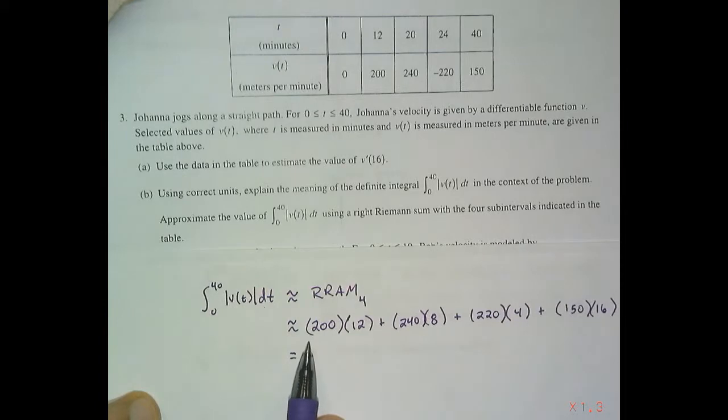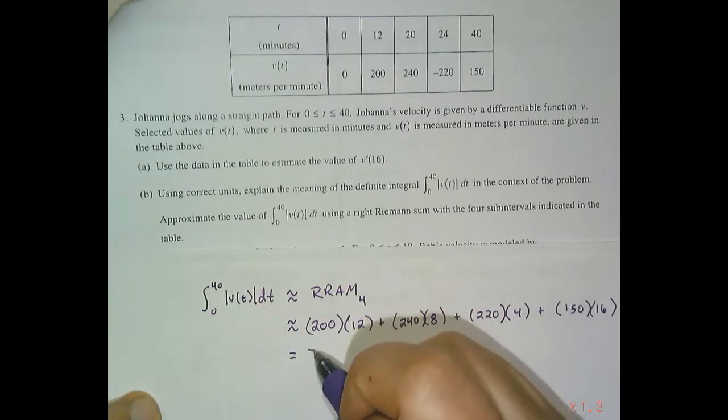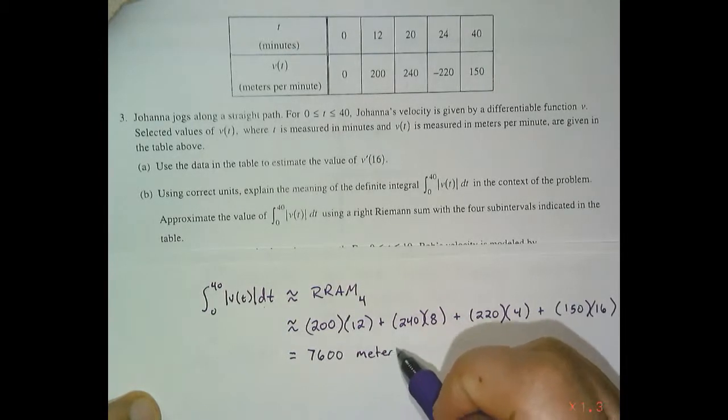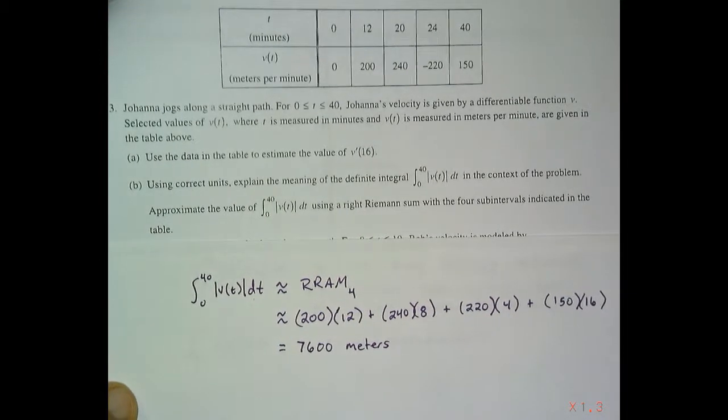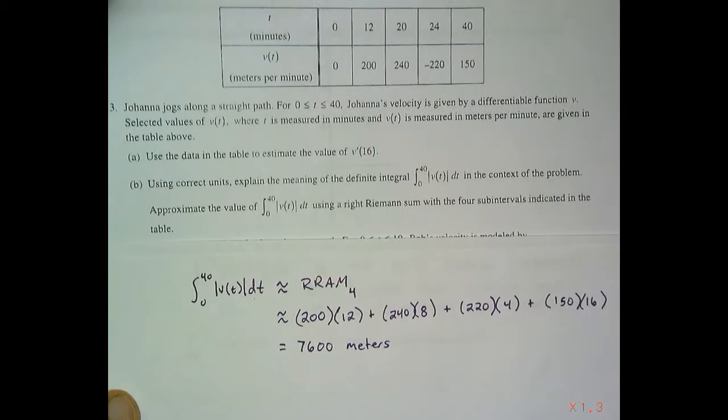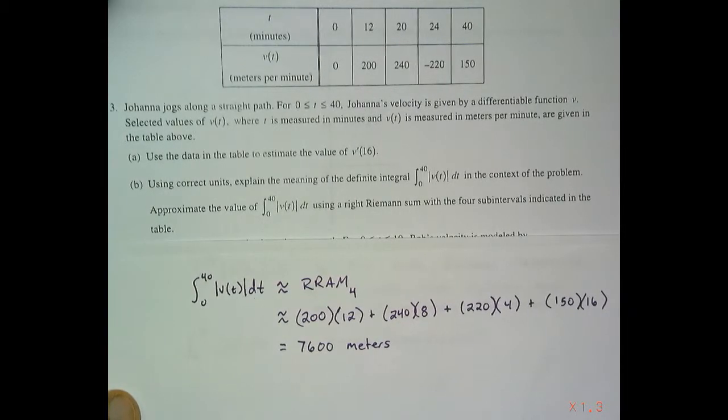If you were to add these up, you get a total of 7,600 meters. 7,600 meters is 7.6 kilometers, which is, I don't know, four-ish miles or four or five miles. I'm really bad at converting.